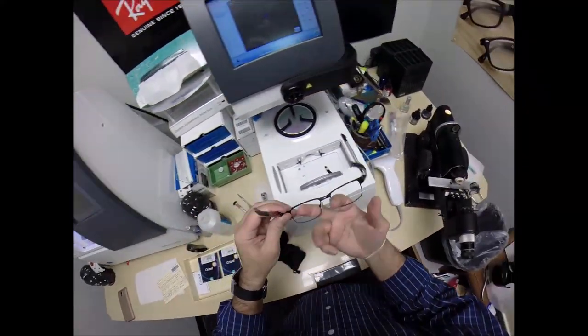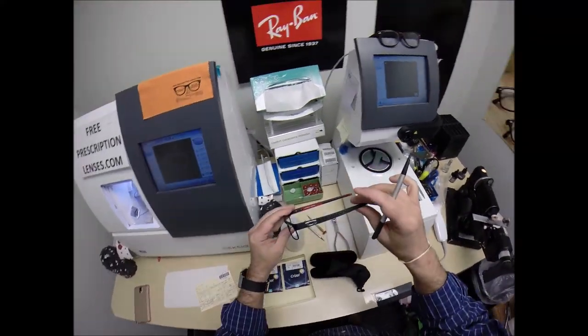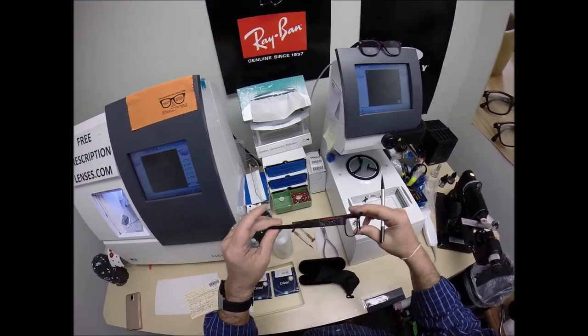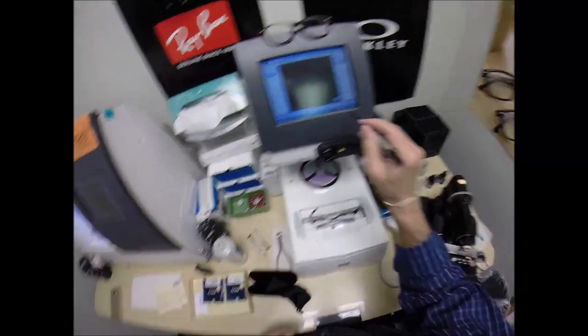It is the Oakley 5079 Carbon Plate in color 01, the matte black. It's got the carbon plate written on there. Normally I would pop out the original demo lenses. They do not come with this frame. Although I've got to tell you, Justin, this frame looks brand new. When they say gently used, boy, was it ever. So I've never seen a used frame in such good condition.